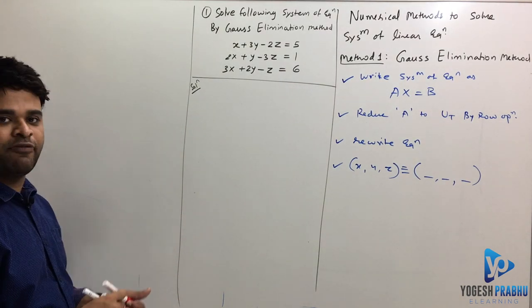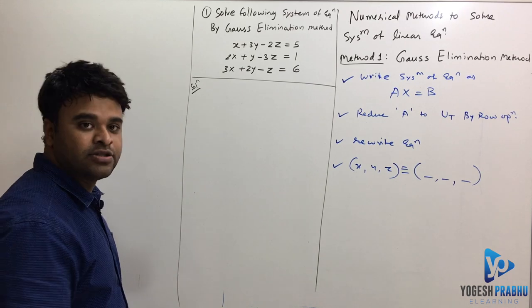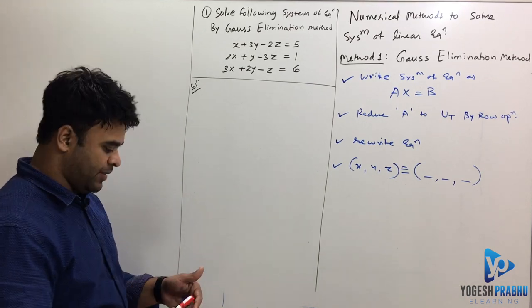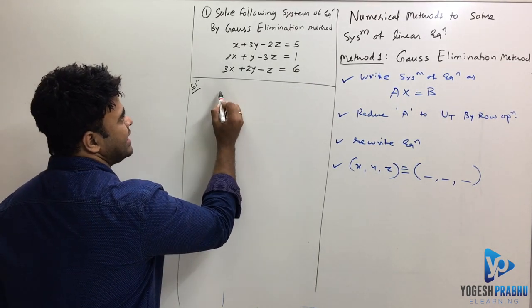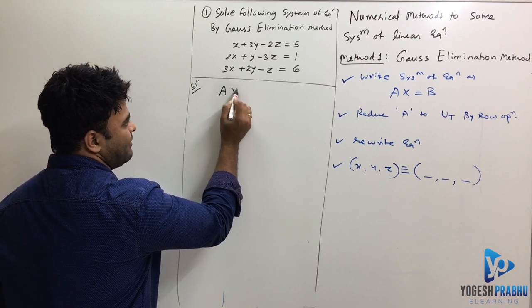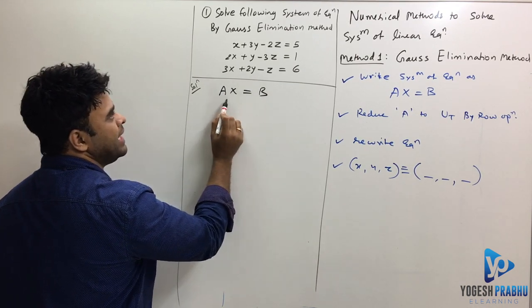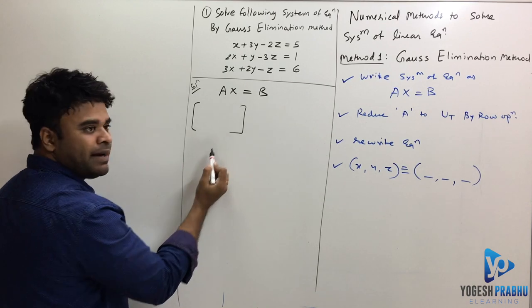First, how do we write it as Ax equals b? If I want to write this as Ax equals b, A is the coefficient matrix.